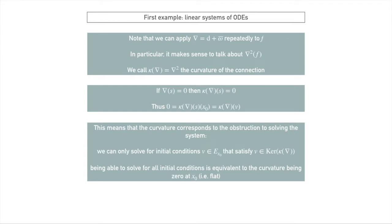We can only solve for initial conditions such that the curvature on that initial vector is zero. So being able to solve a linear system of ODEs for all initial conditions is equivalent to the curvature being zero at x0. And if this is the case, we say the curvature is flat. As a side note, the word flat is very overloaded here, even more so than the word connection, in that flat means three or four different things, and they're all very similar but subtly and importantly different. Here, a curvature is flat or a connection is flat if its curvature is identically zero.